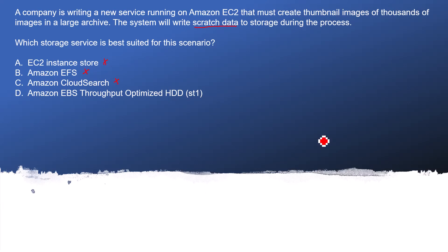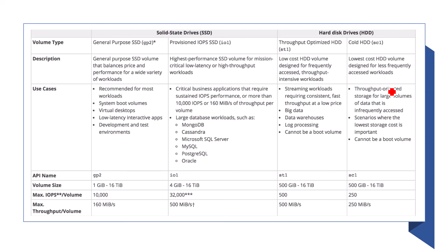The question already mentions processing thousands of images in a large archive. When a question involves an archive or processing a huge amount of data, you should think about HDD-type storage. As noted in the use cases, if you are dealing with big data, go with HDD because it is low cost and throughput is very high.